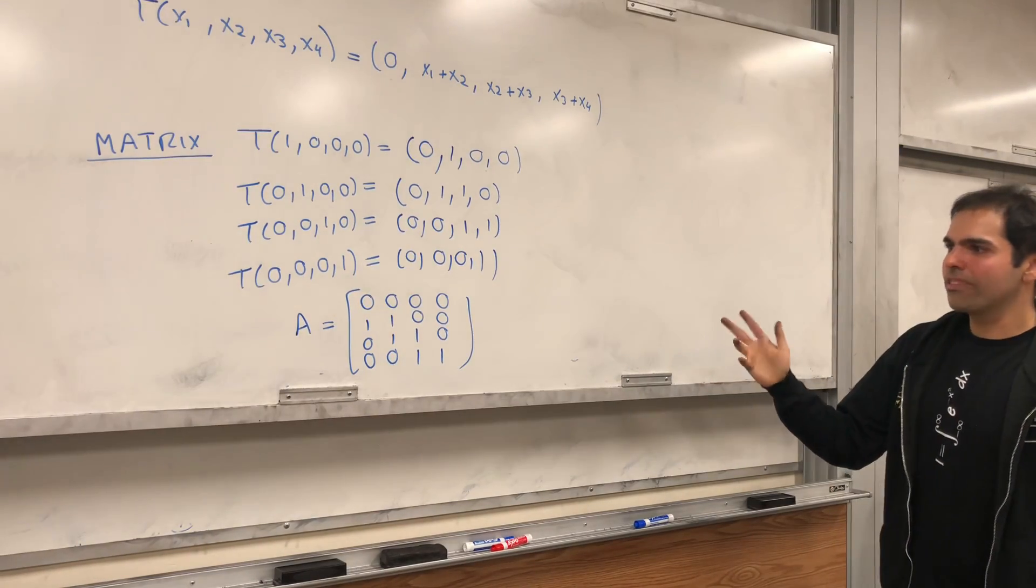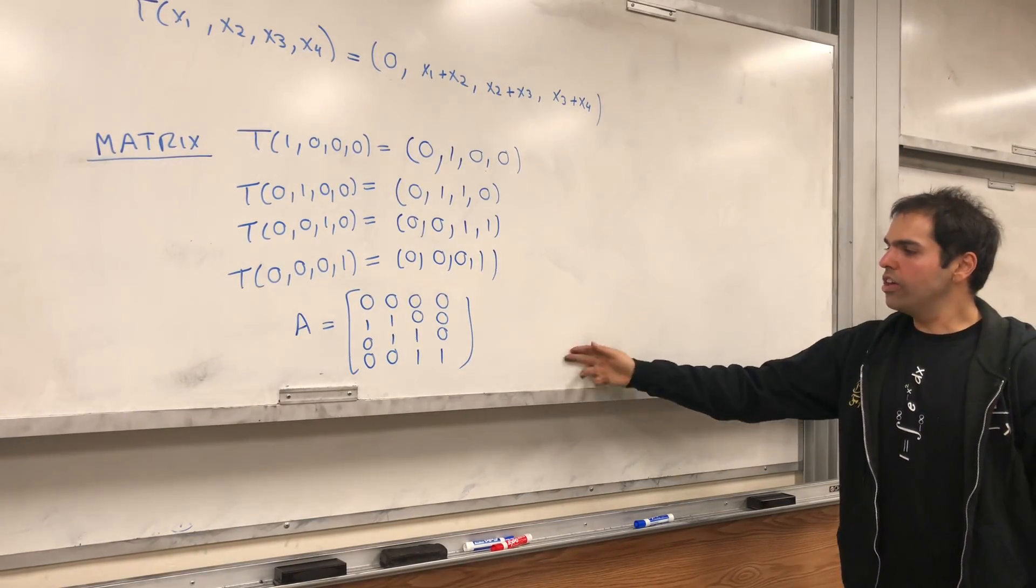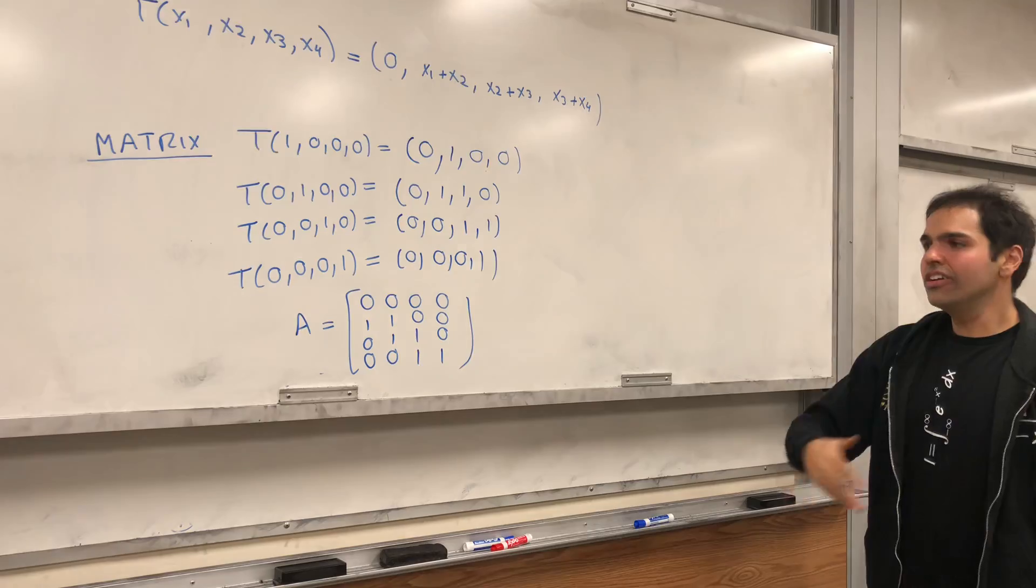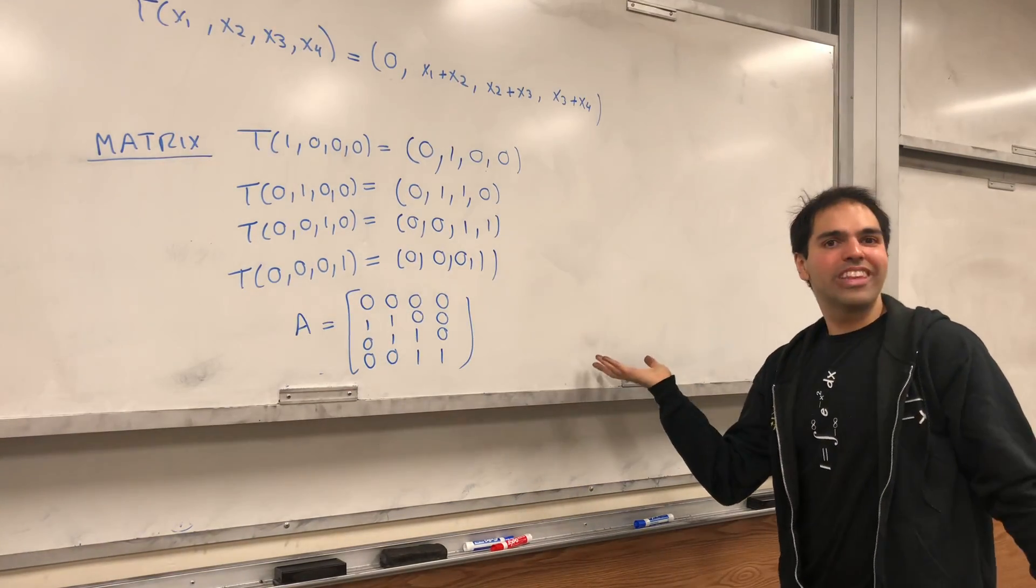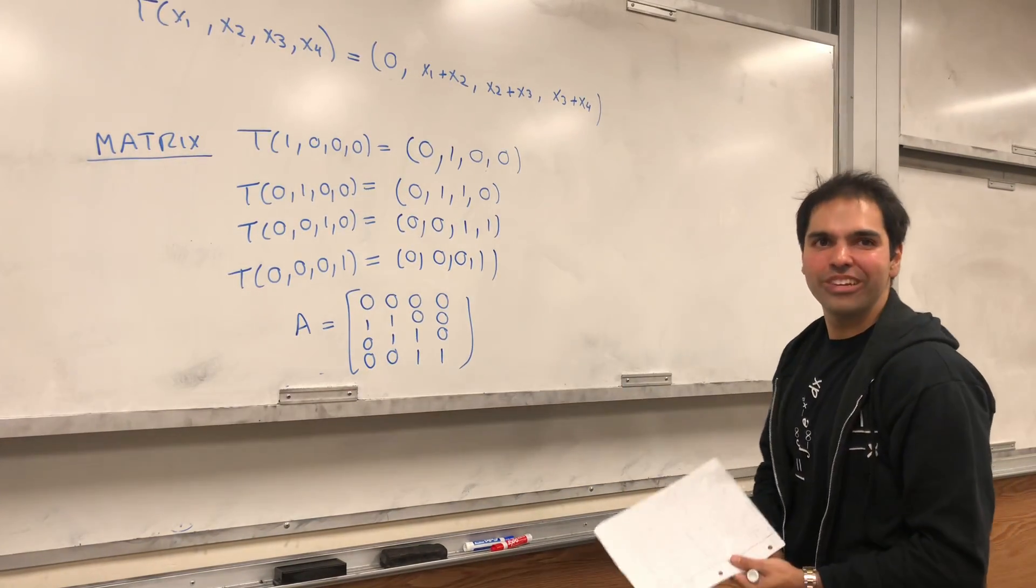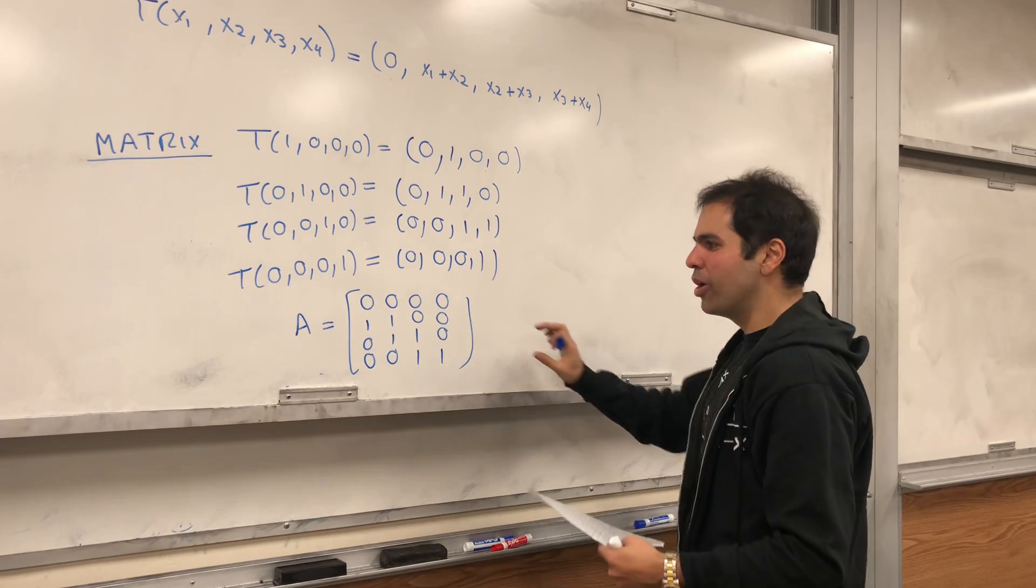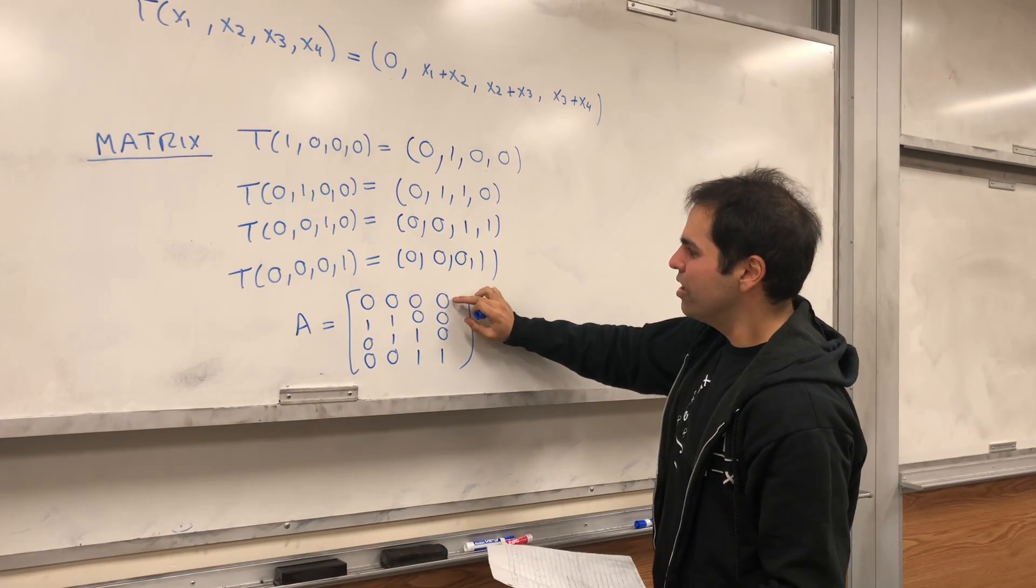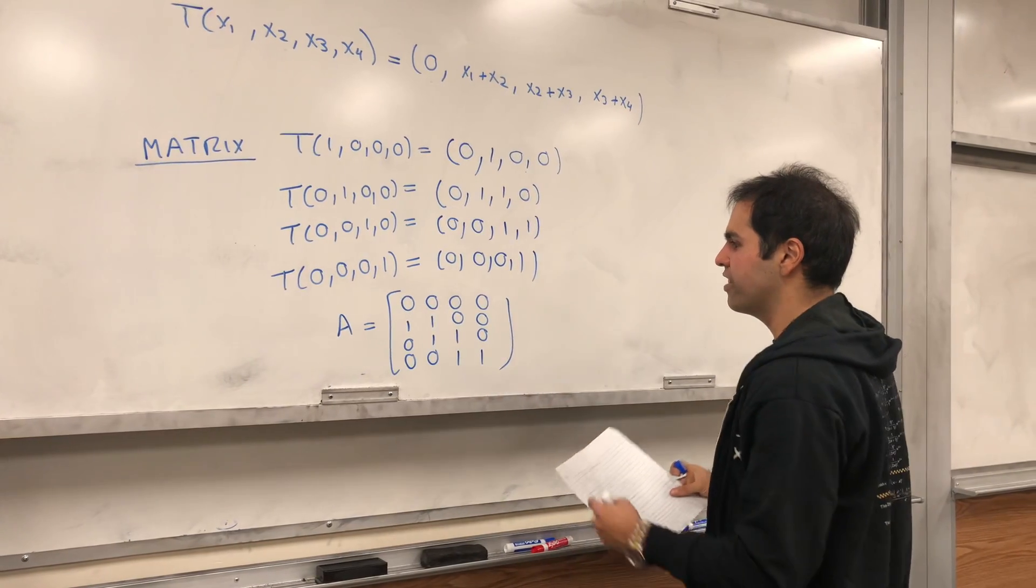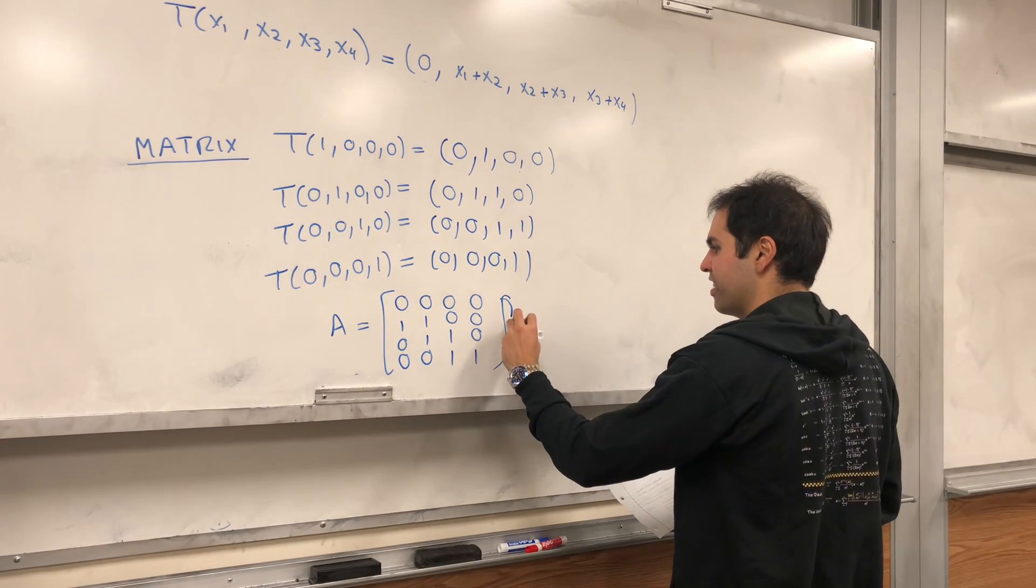The second thing is, is it one-to-one or is it onto? Well, you don't know what the answer is, so let's just row reduce, as usual. But here the row reduction is easy. Basically, all you do, you put this row of zeros at the bottom.